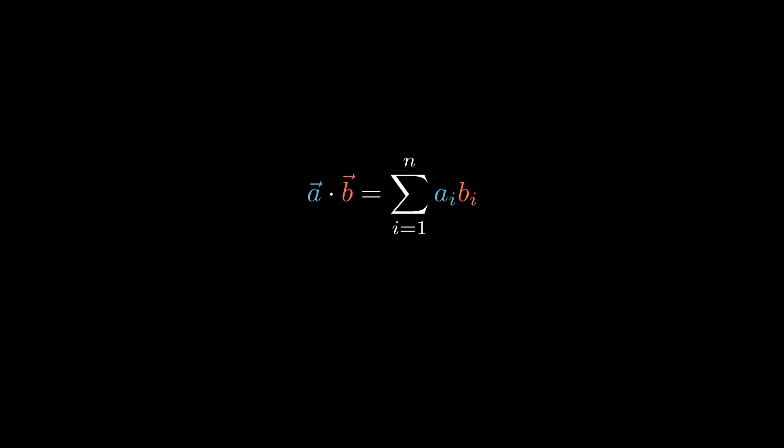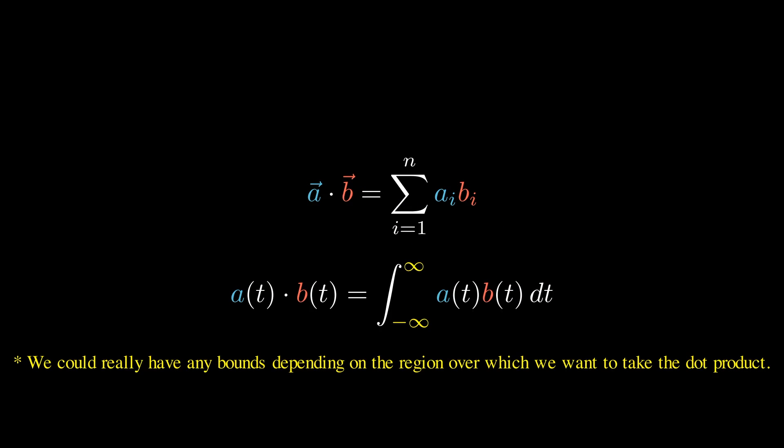For an infinite dimensional vector space, we can still multiply component-wise, but we need a special sum that's designed for dealing with infinities. Often we think of summing up all the components of the product over the entire domain, but our interval doesn't always have to be infinite.